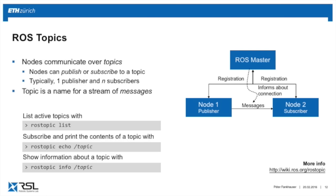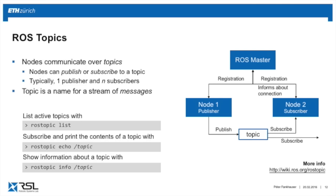Nodes communicate with each other through ROS topics. One node can publish and subscribe to a topic. A topic is a stream of messages transferred between nodes. Once nodes register with the ROS master, one node can declare itself a publisher on a topic, and another node can subscribe to it. The message flows from publisher to subscriber, and the ROS master ensures this connection. You can have multiple nodes subscribing to a single publisher — it typically flows from one node to N other nodes.